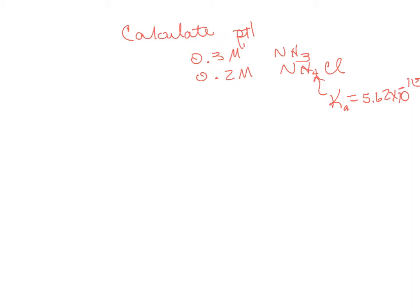Let me go through what you have to do on the test. First ask yourself: is this a buffer? If you notice that two components in a mixture are conjugate pairs with each other, that's typically a buffer. The buffer is made up of 0.3 molar ammonia and 0.2 molar ammonium chloride, with Ka for ammonium equal to 5.62 times 10 to the minus 10. NH4Cl is ionic and separates into individual ions when it dissolves.